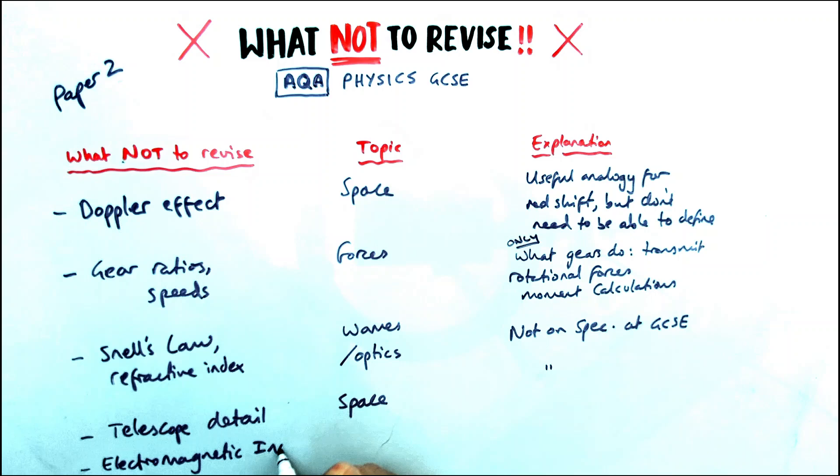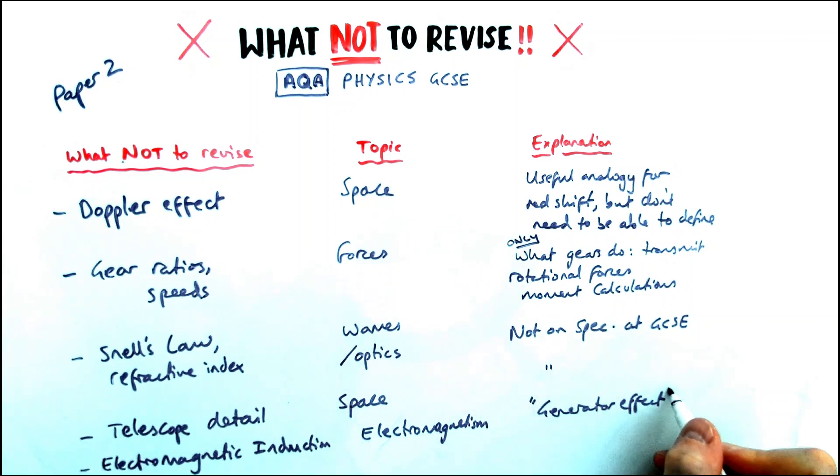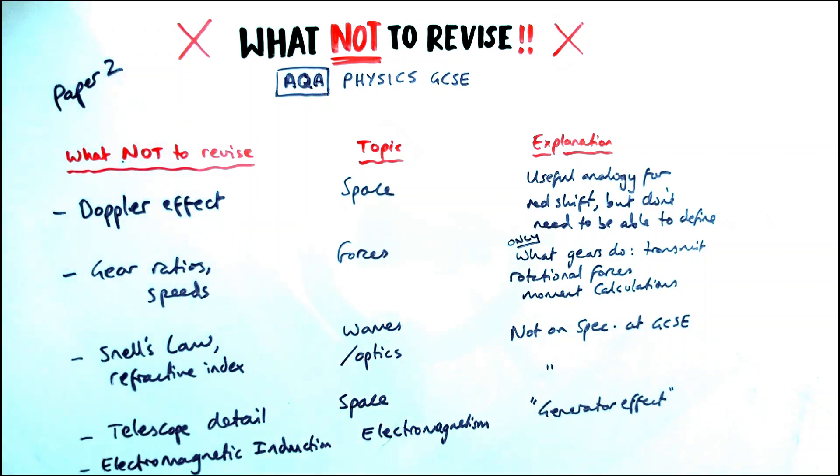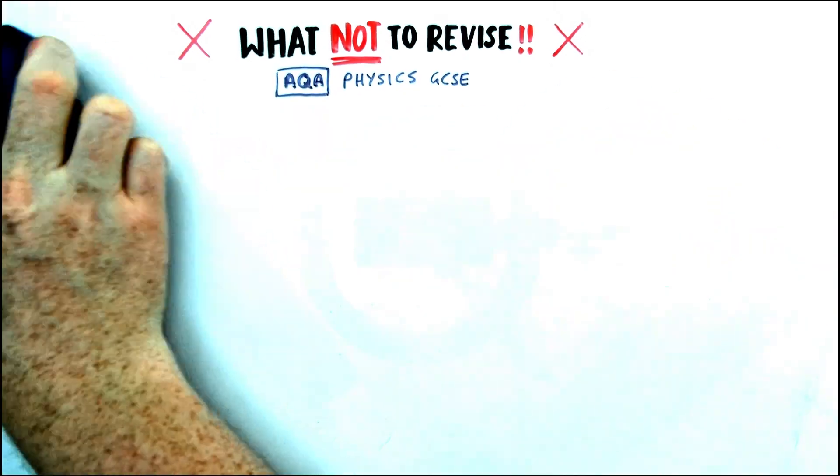And the last thing is more of a phrase, really, is electromagnetic induction. For AQA, they don't use that in the specification at all. They only use the phrase generator effect. Electromagnetic induction is a similar type of thing, but on your spec it says generator effect, so expect that on mark schemes and put it if you are referring to how electricity is produced, essentially.